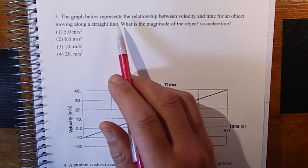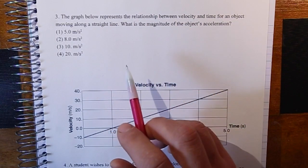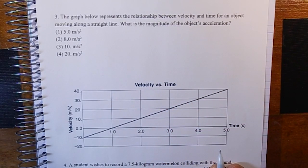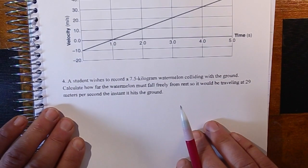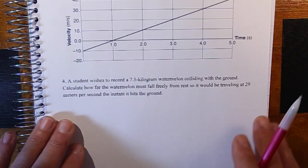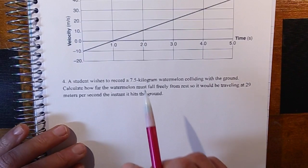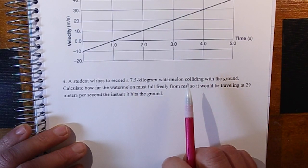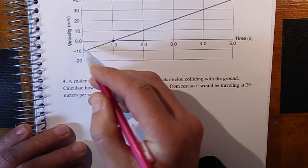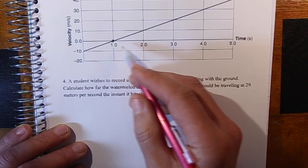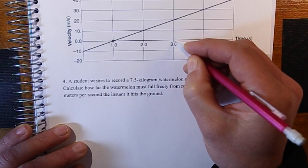The next problem: a graph represents the relationship between velocity and time for an object moving in a straight line. What is the object's acceleration? For a velocity-time graph, the slope of the line equals the acceleration. We can also find it by picking points on the graph — for example, starting at one second where velocity is zero meters per second.